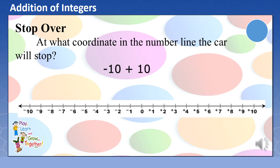For 5 points, at what coordinate in the number line will the car stop?